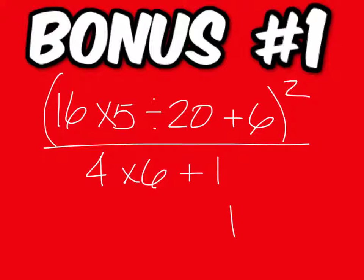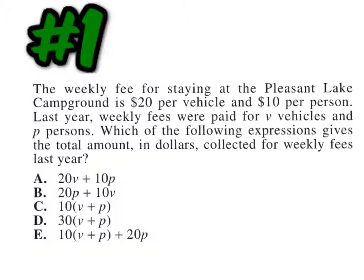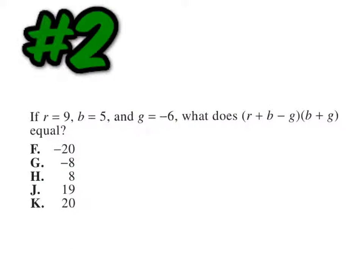The bonus is for multiple choice. Pick the letter. Bring it up and show it to me. You have $20 per vehicle, V, and $10 per person, P, so this is the only option that makes sense, A. Everybody had the right answer on this one, and it is F, negative 20. Last one.